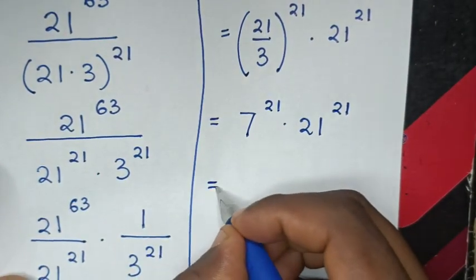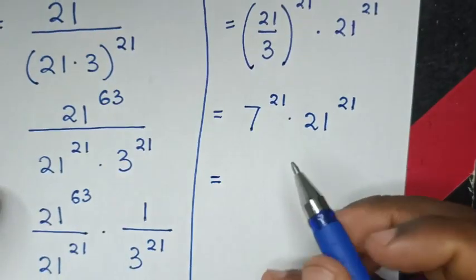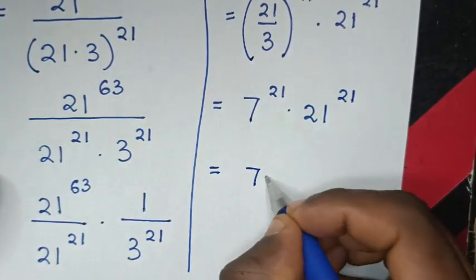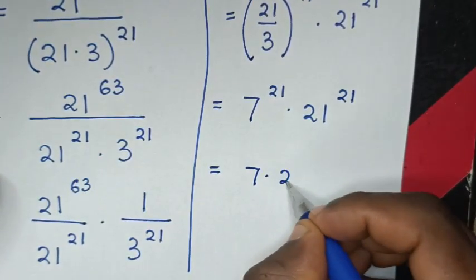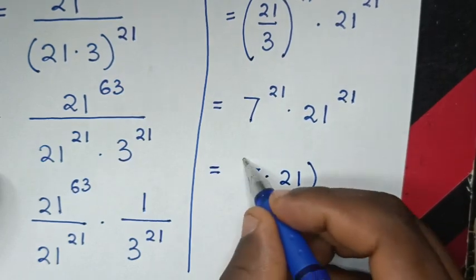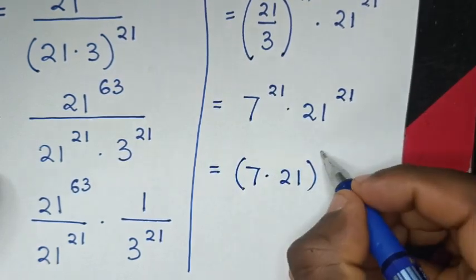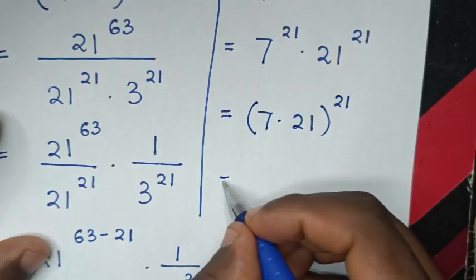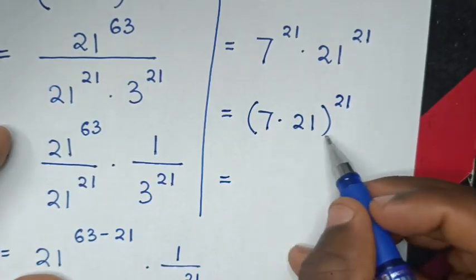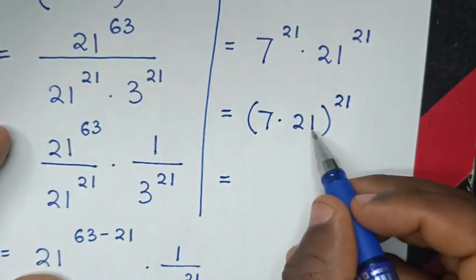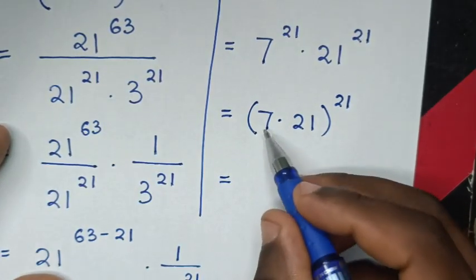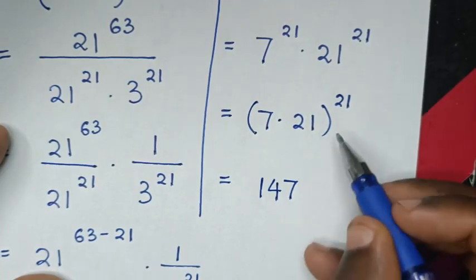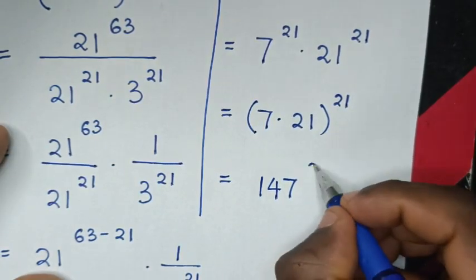Then it will be equal to 7 power of 21. So it will be equal to 7 times 21: 7 times 1 is 7, 7 times 2 is 14 — so the answer is 14 power of 21.